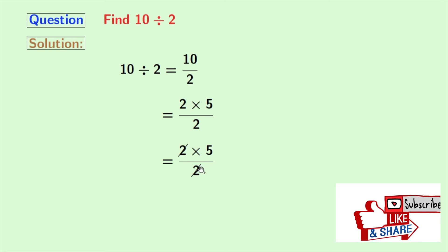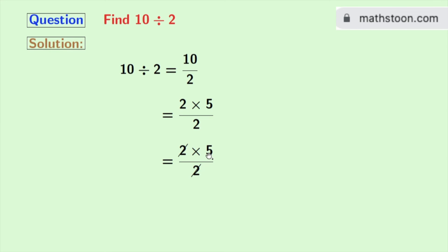So 2 gets cancelled, and we are left with 5. So this is our final answer.